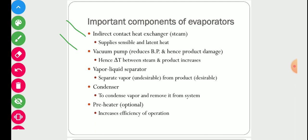If the material is heat sensitive, we use a vacuum pump to reduce the boiling point and decrease the temperature of the solution. Also, by using a vacuum pump, the ΔT between steam and product will increase, because if the solution boils at a lower temperature, the difference between the steam temperature and the solution temperature increases.